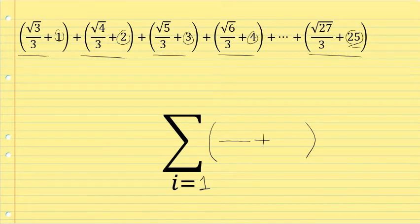In every single term, the denominator of the fraction is always 3. That's not going to change. So when we write this sum, there will be a 3 in the denominator of that first term all the time. So I'm going to put a 3 there. It doesn't matter what the value of i is as we move through the sum. The denominator of the fraction is always 3.